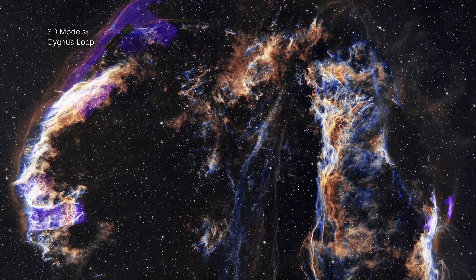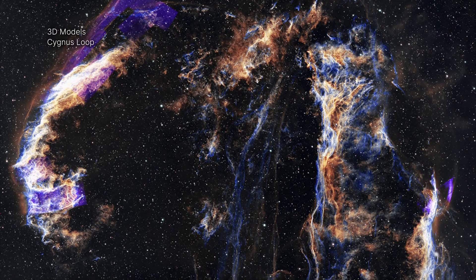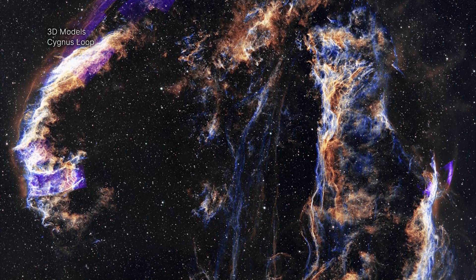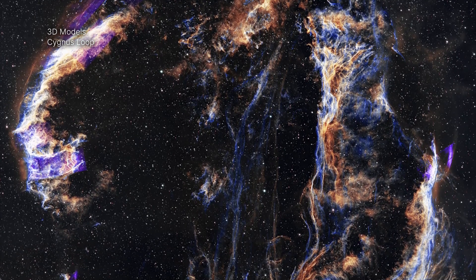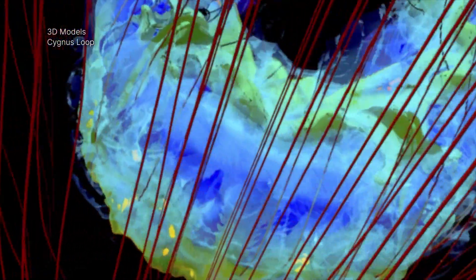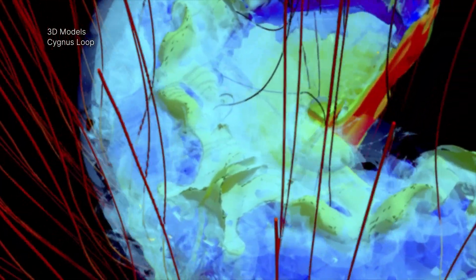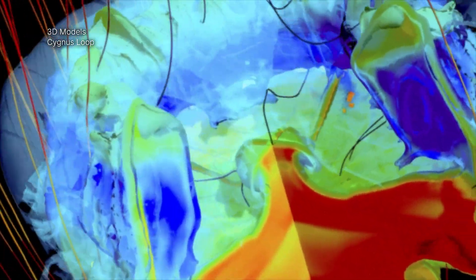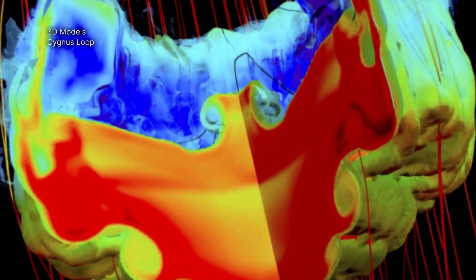The Cygnus-loop, also known as the Veil Nebula, is a supernova remnant, the remains of the explosive death of a massive star. This 3D model is the result of a simulation describing the interaction of a blast wave from the explosion with an isolated cloud of the dust and gas in between the stars.